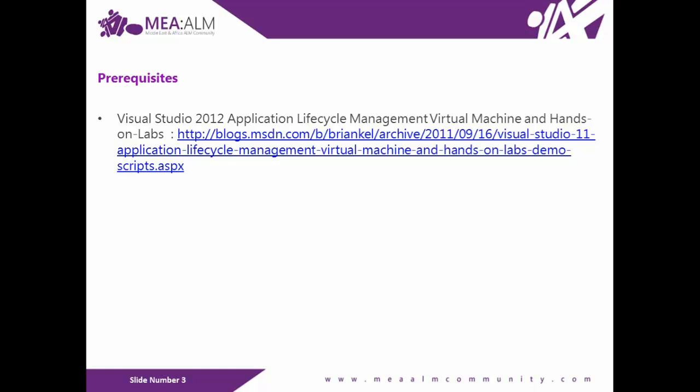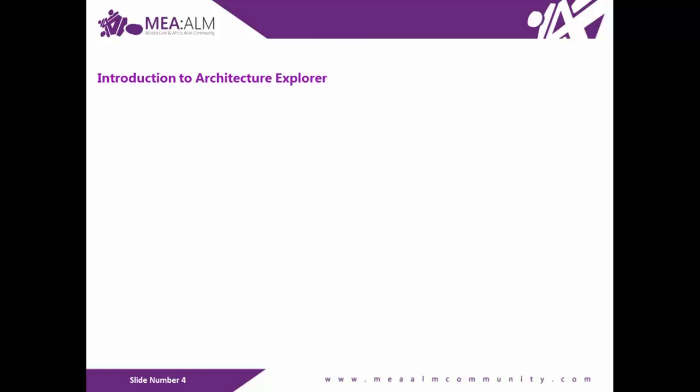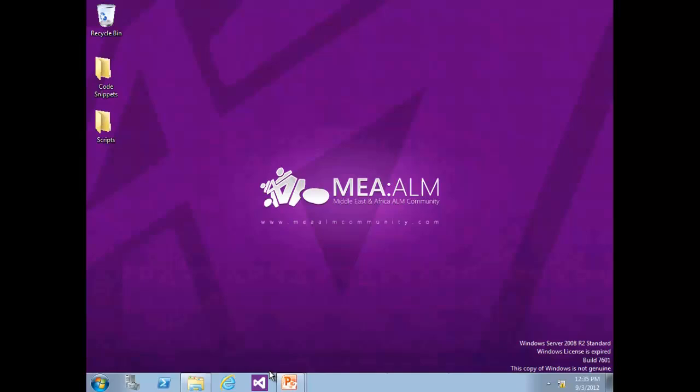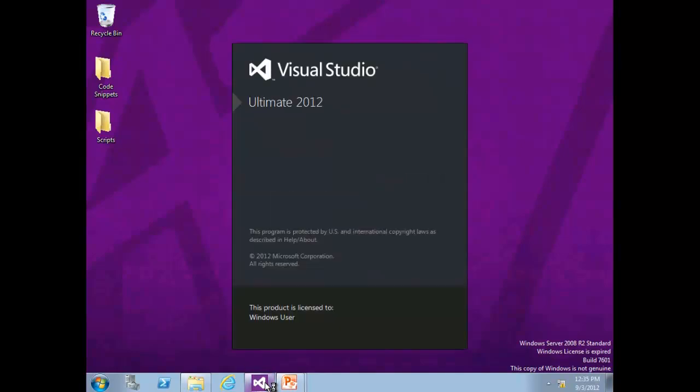To complete this lab, you will need the Visual Studio 2012 virtual machine provided by Microsoft, which you can download from the provided link. The first exercise is an introduction to Architecture Explorer. In this exercise, you will learn how to use the Architecture Explorer tool to navigate the project source structure and generate DGML diagrams. Let's start by opening Visual Studio 2012 Ultimate version.